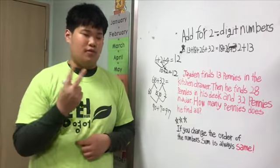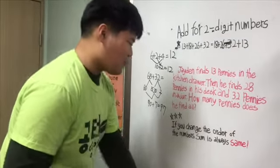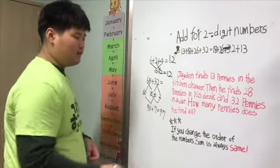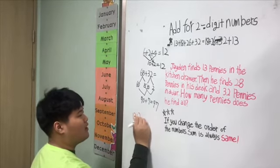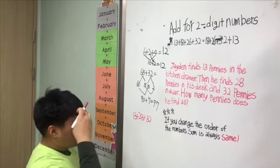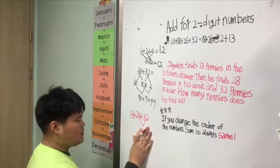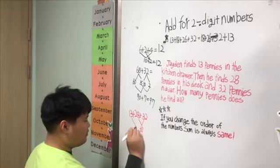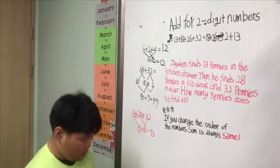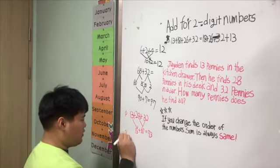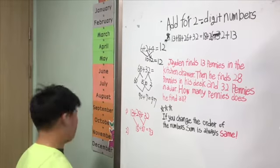So, we can do this problem two ways. The first way: this problem is 13 plus 28 plus 32. 28 plus 32 is 60, and 60 plus 13 is equal to 73.